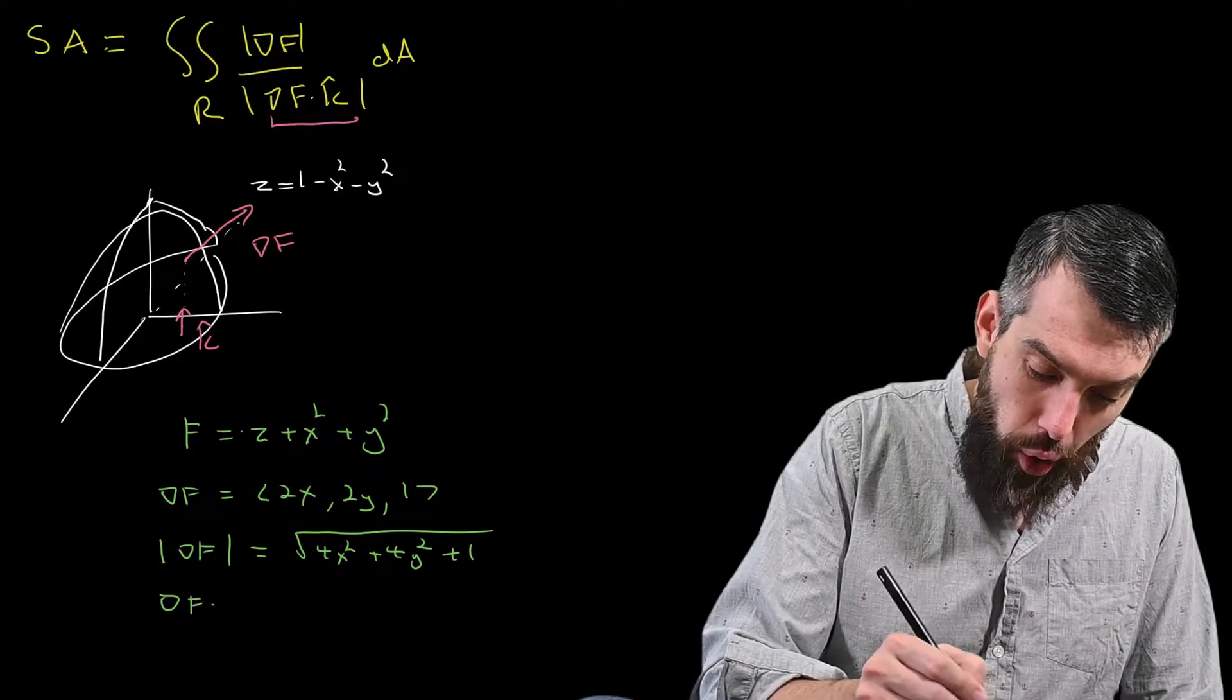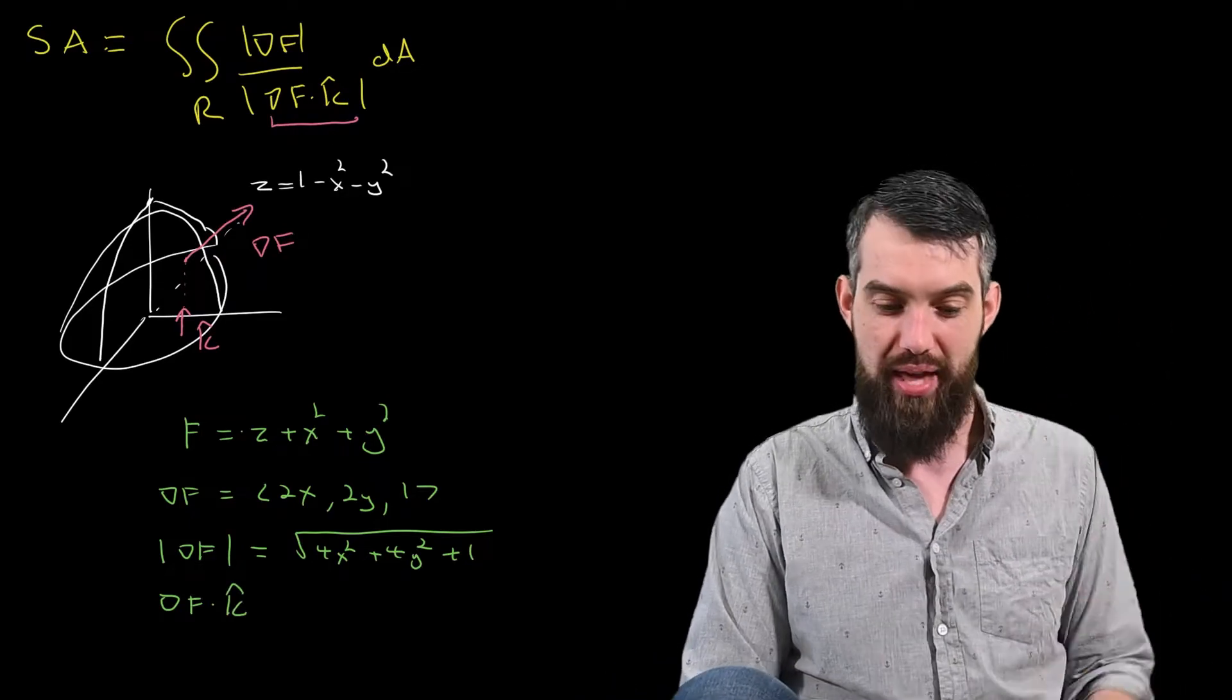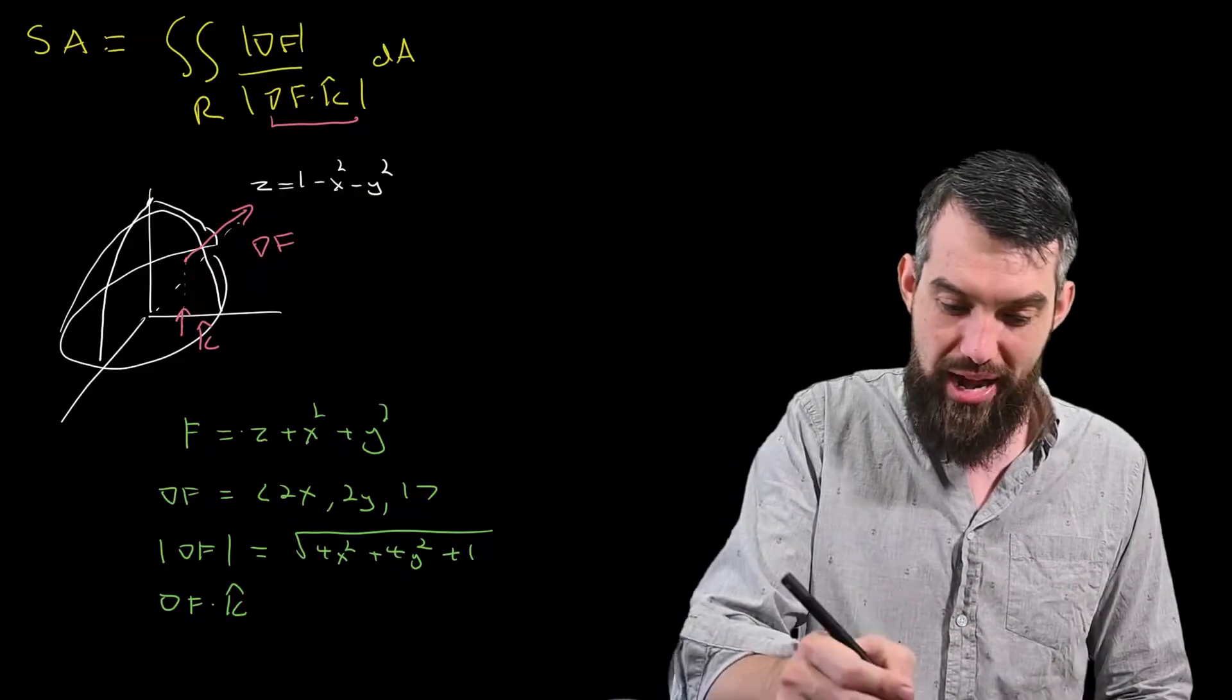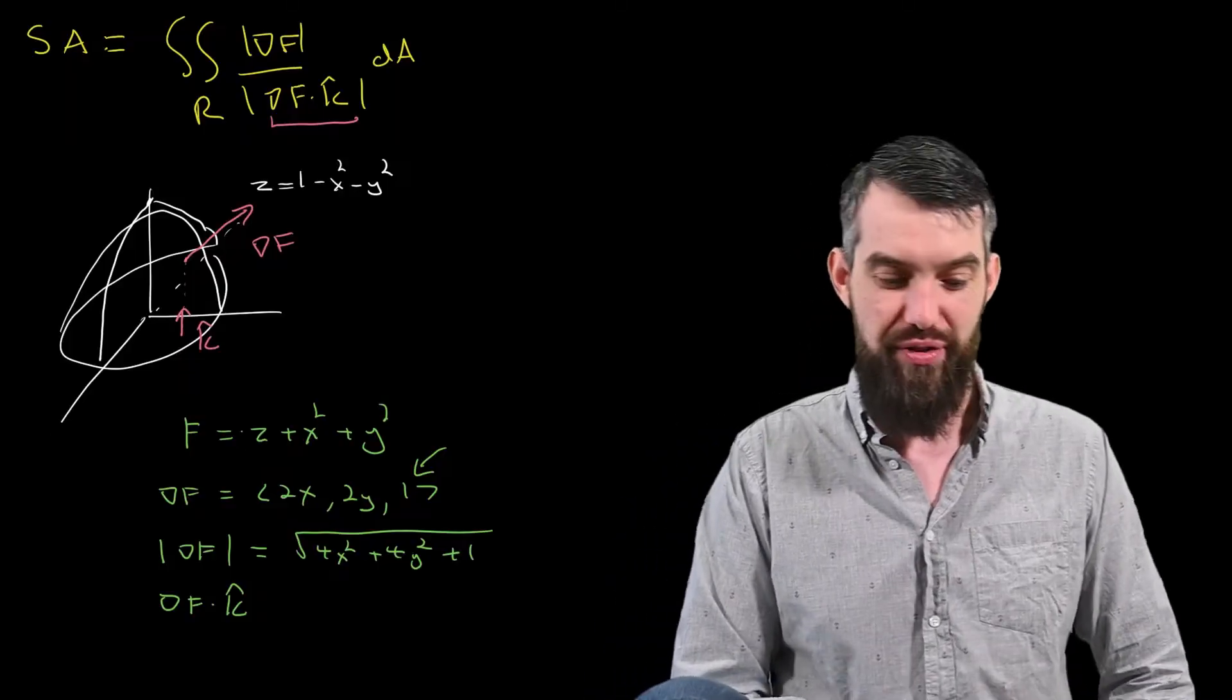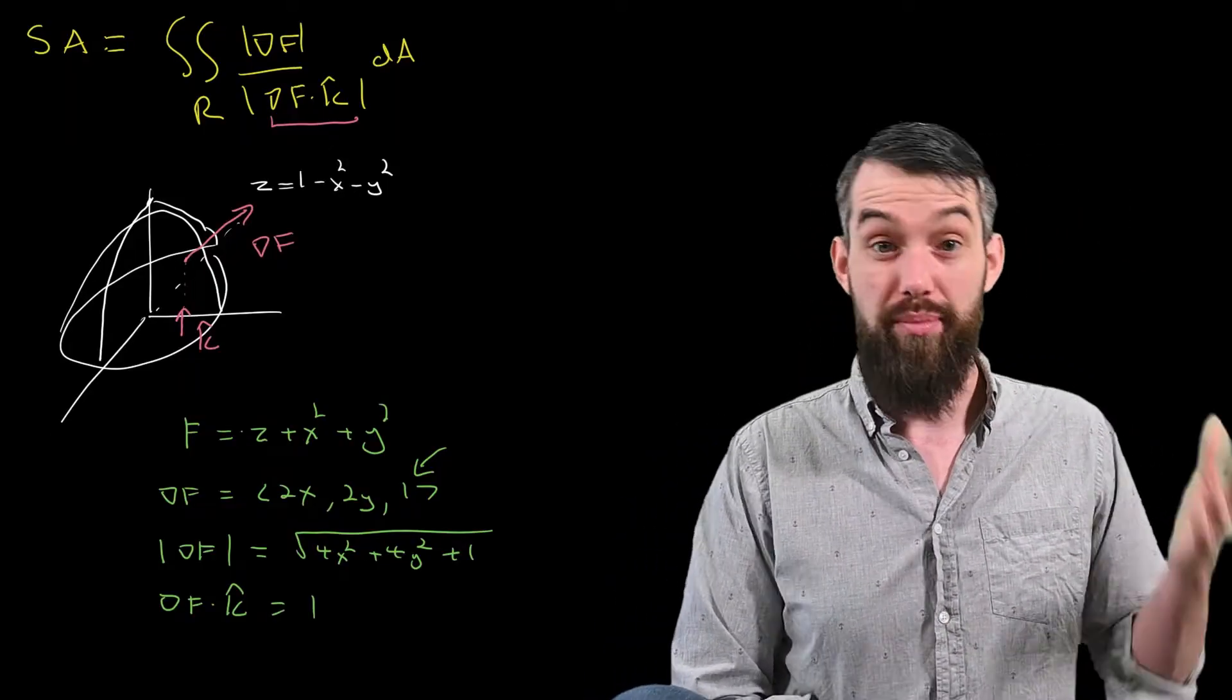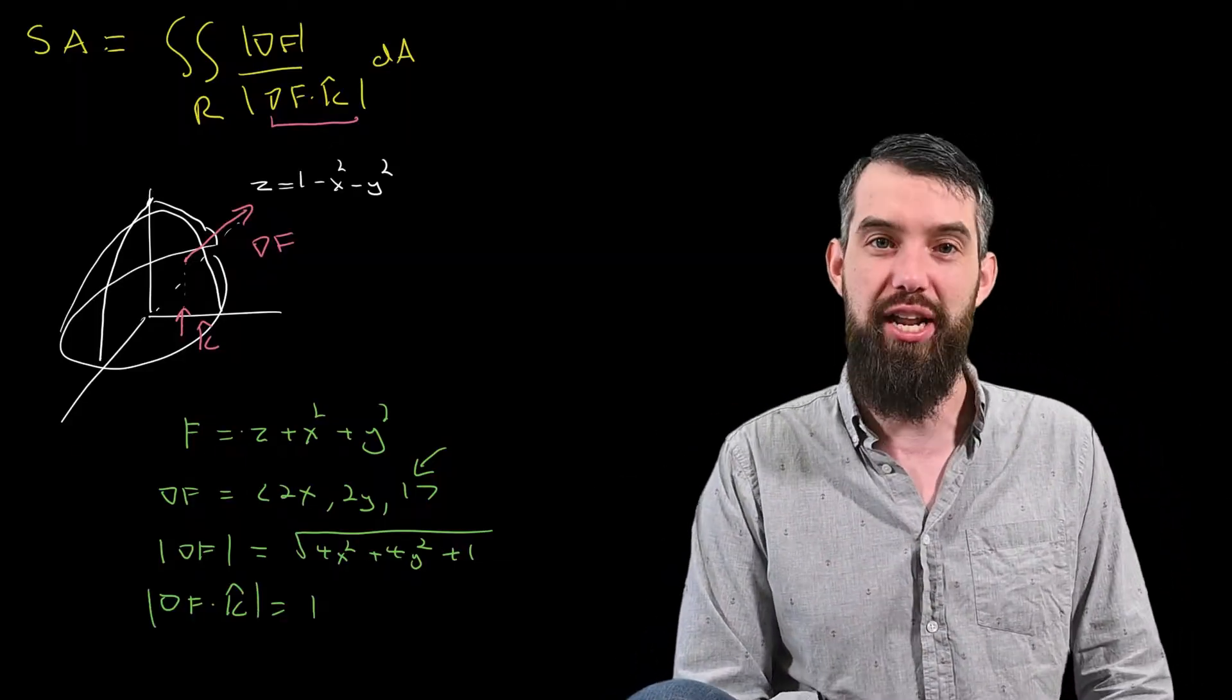Gradient of f dotted with k hat now. So k hat is just 1 in the k hat component. And so there's no x component and no y component, and I'm dotting it with the 1, which is the k hat component of the gradient of f. And so this is just going to be equal to 1. The absolute value of 1, of course, is just 1, so I could add absolute values on there and not change anything.